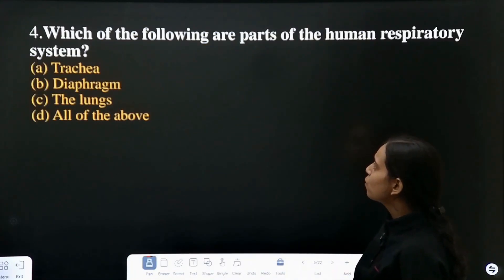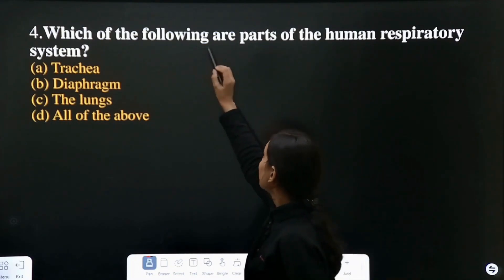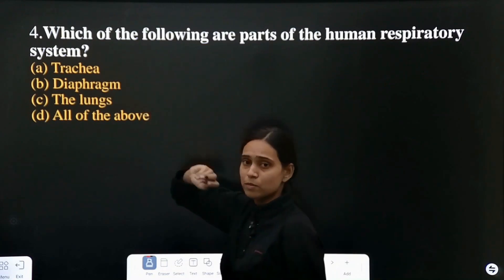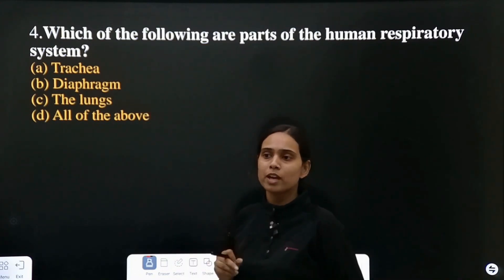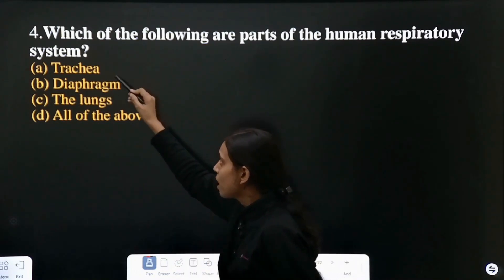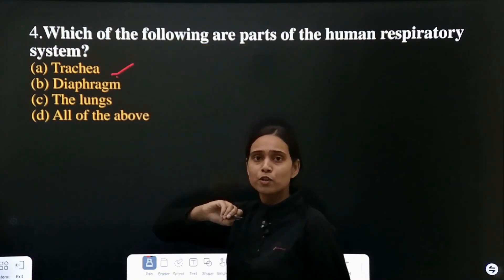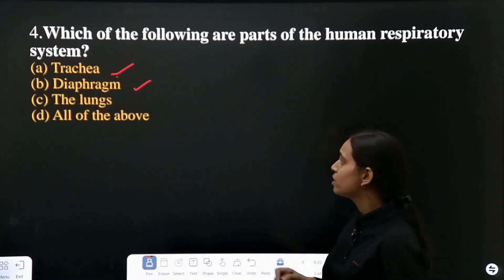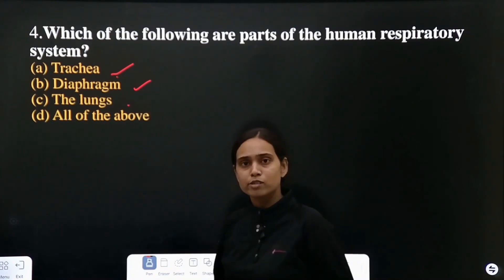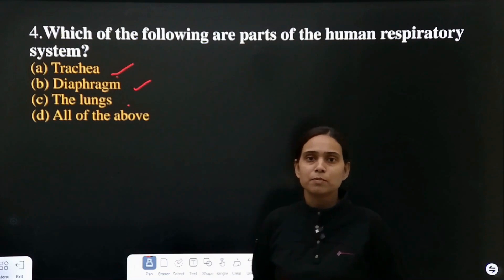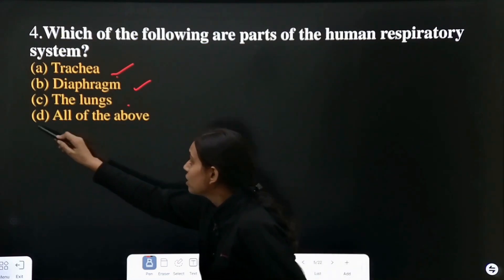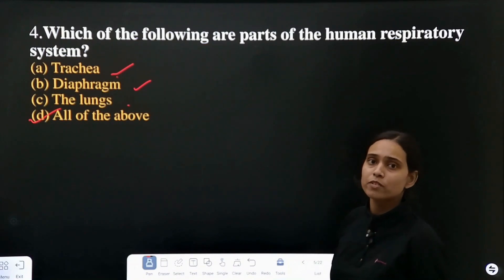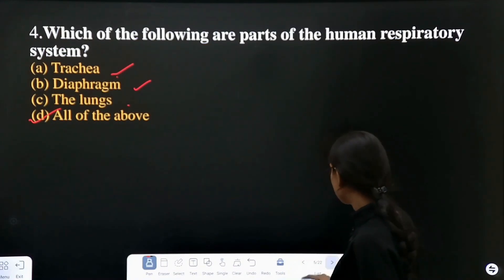Question number 4: which of the following are part of the human respiratory system? What are the parts of the human respiratory system? Trachea — yes, it is a part. Diaphragm — yes, it is also a part. Lungs — yes, also a part. So all of the above are parts of the human respiratory system.